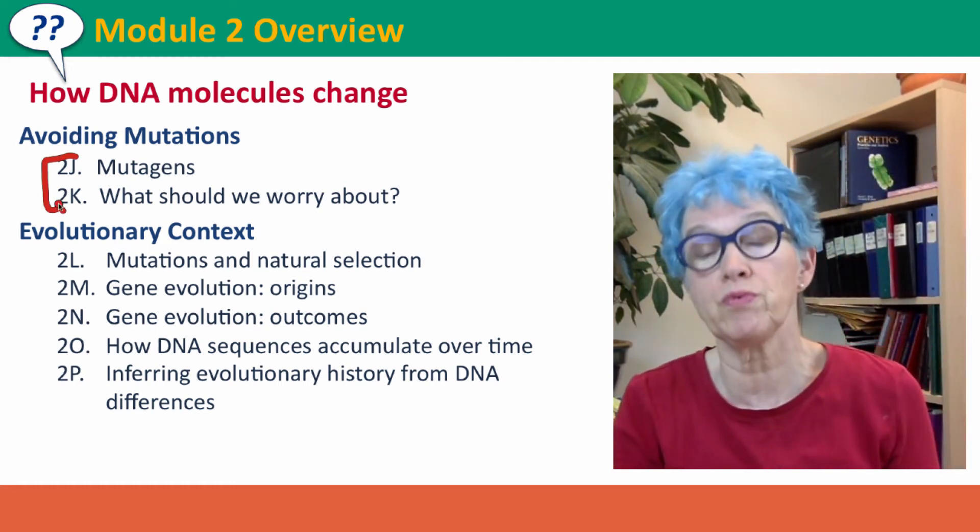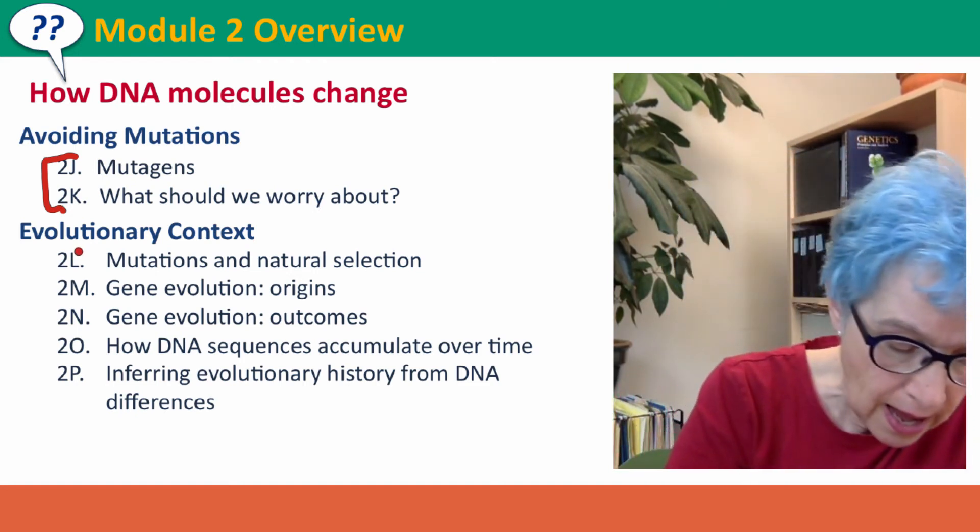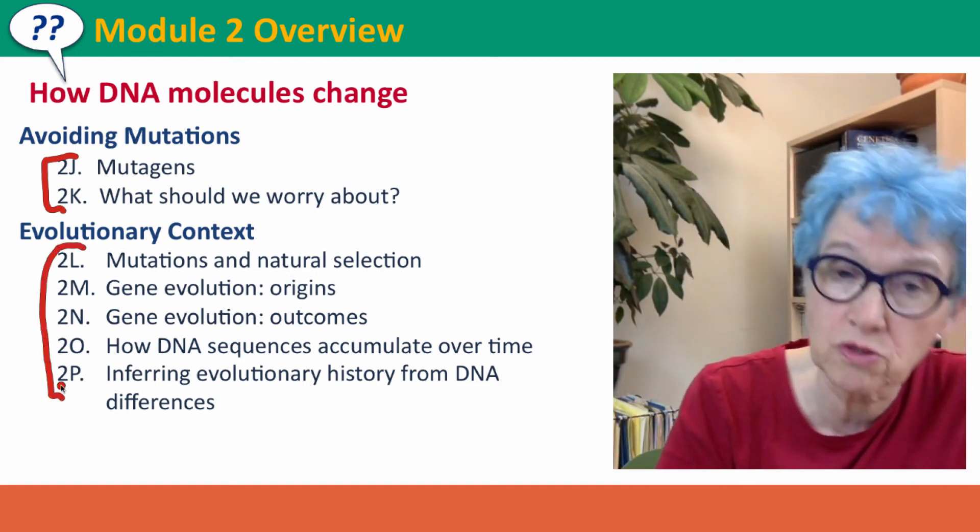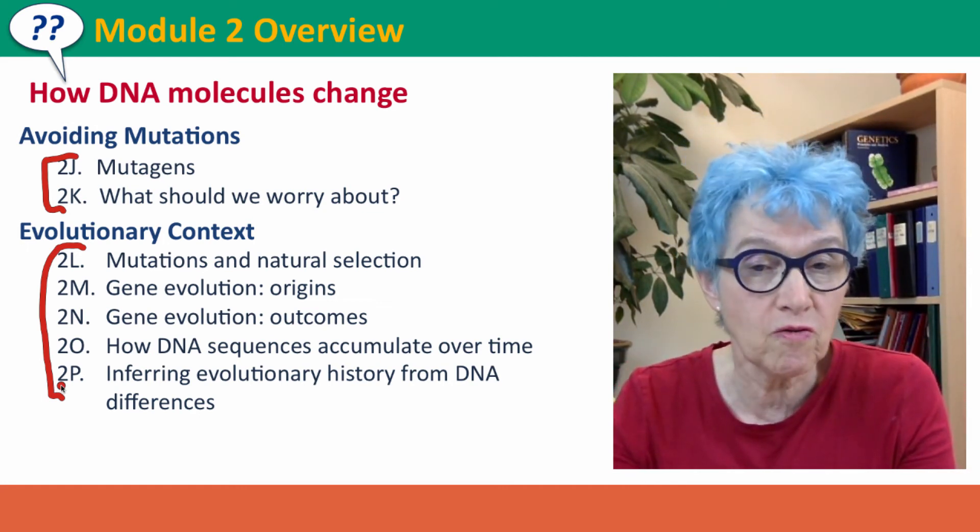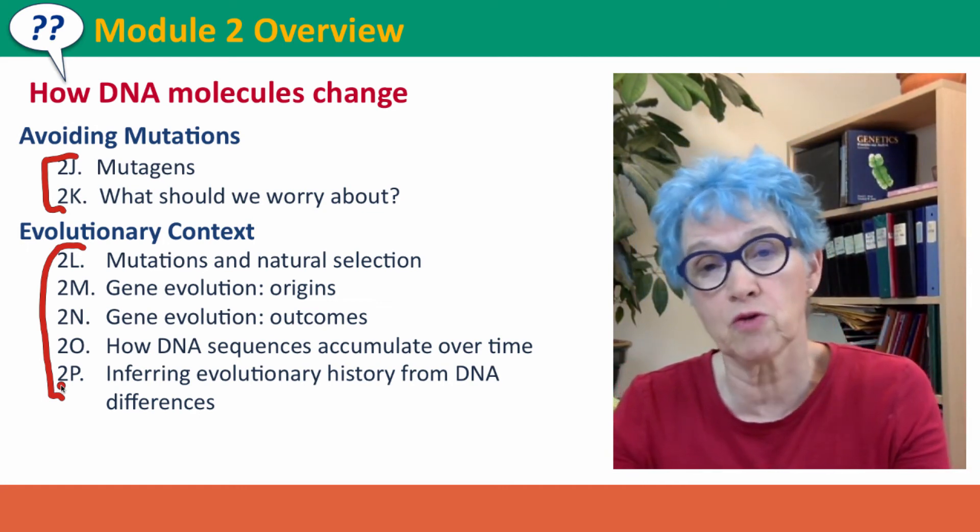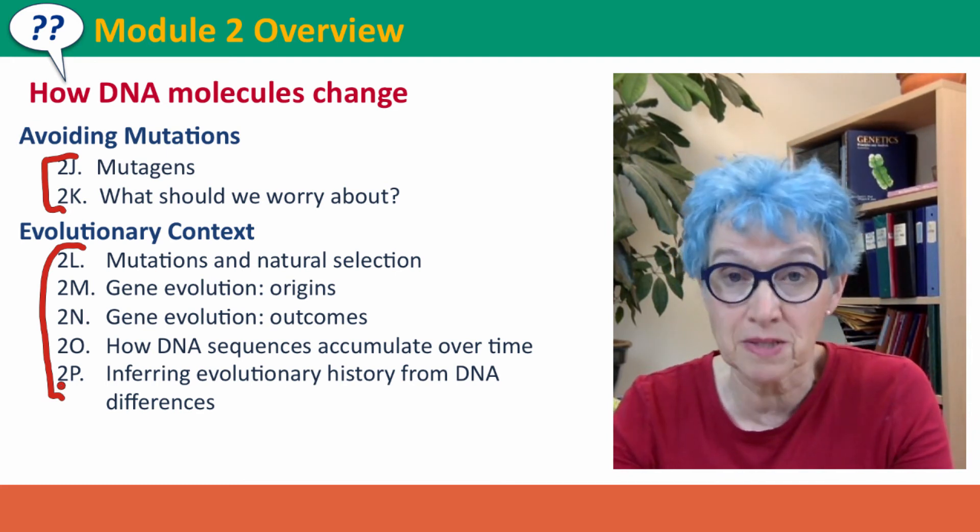And then finally, we'll pull things together into this big evolutionary context, thinking about how natural selection acts on mutations, how genes evolve, and how we can use the accumulation of sequence differences to investigate how evolution happens.